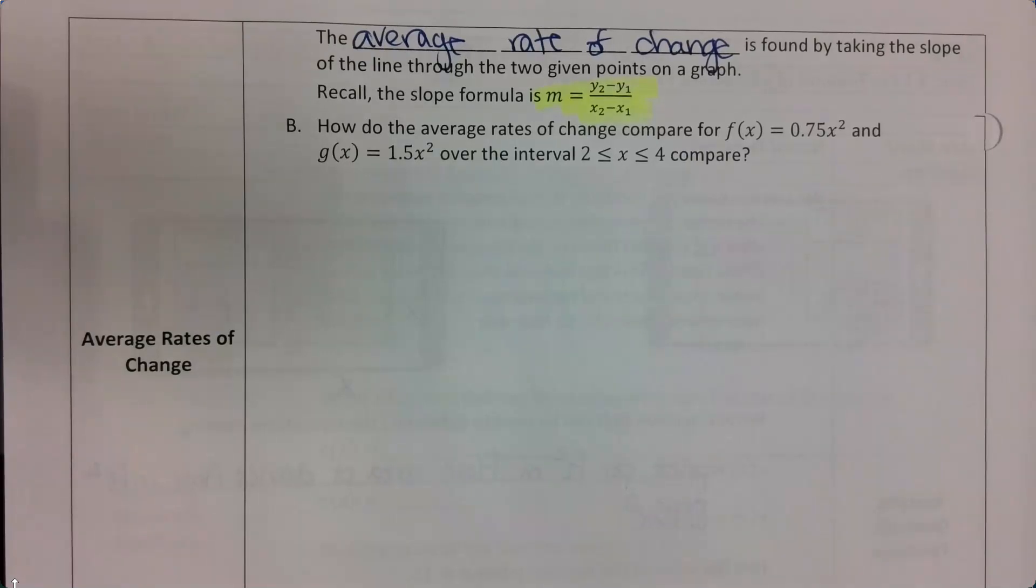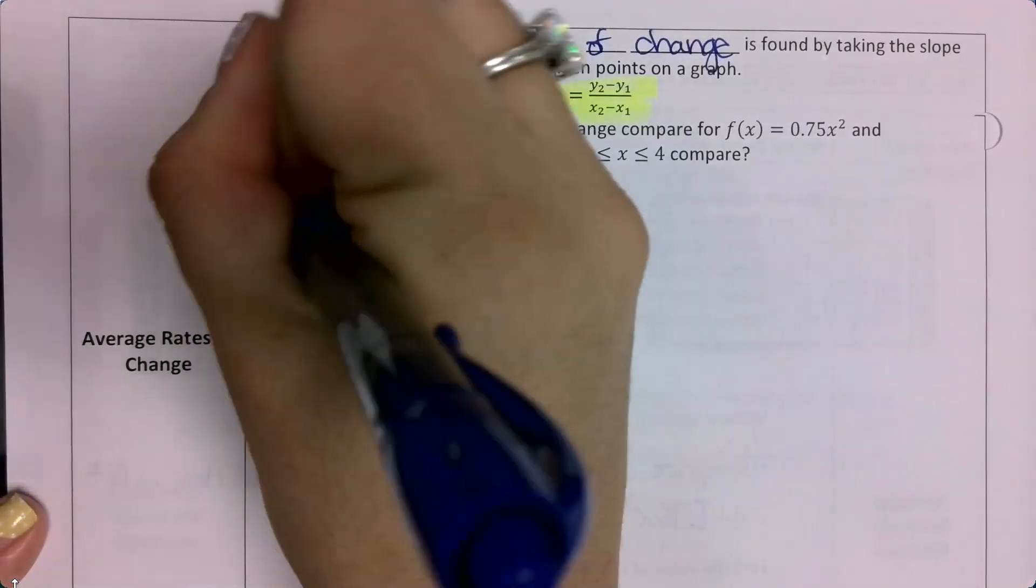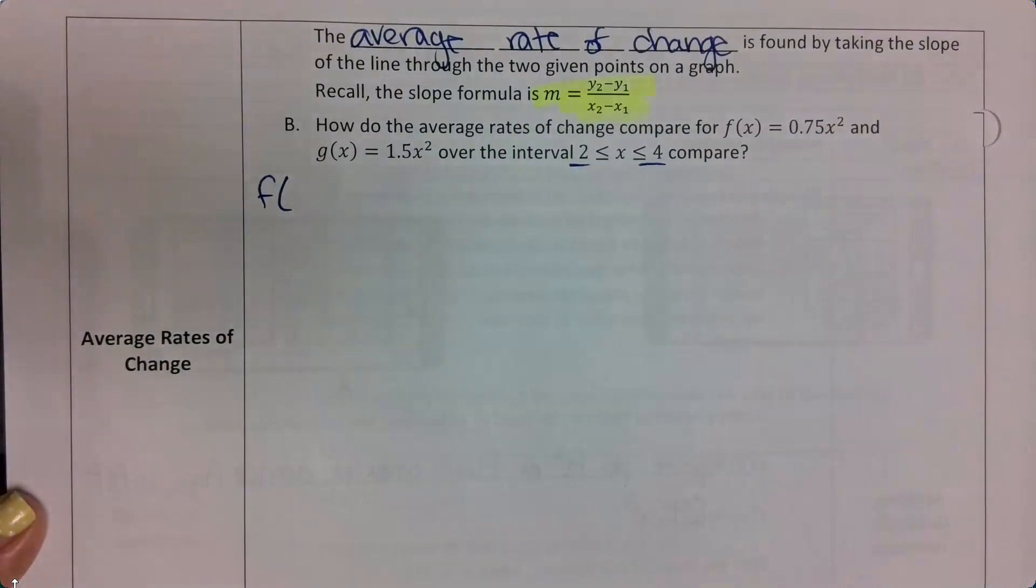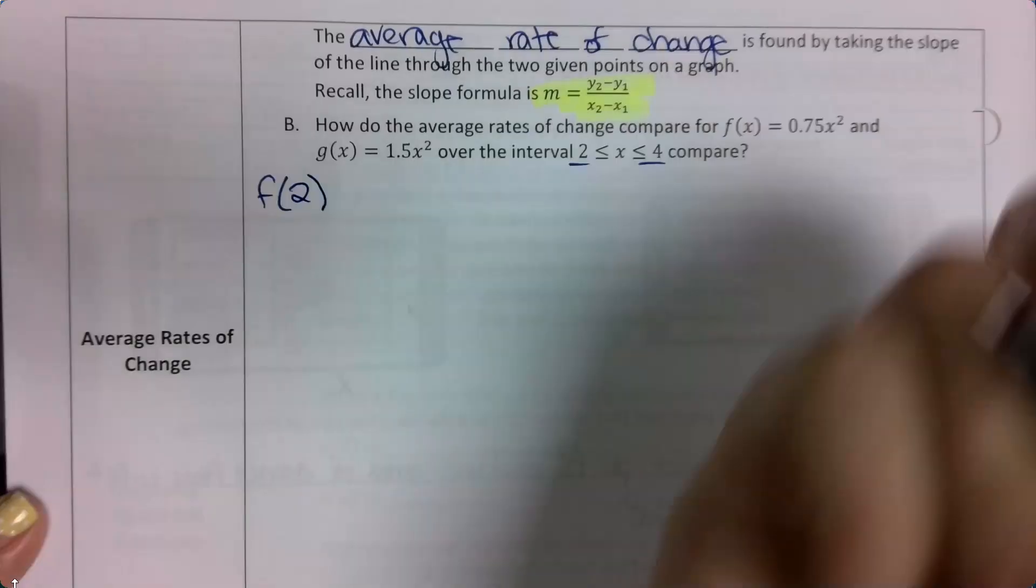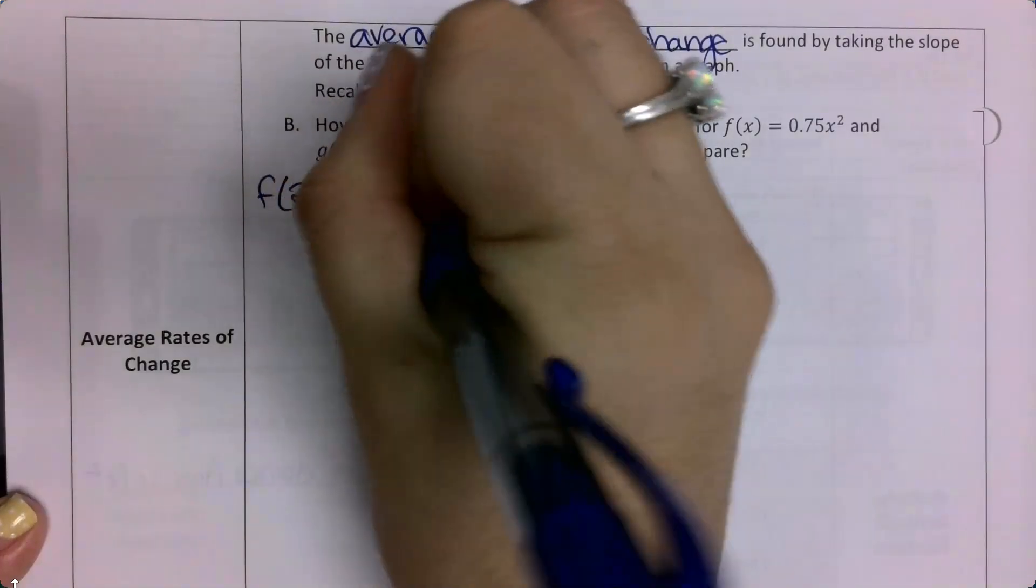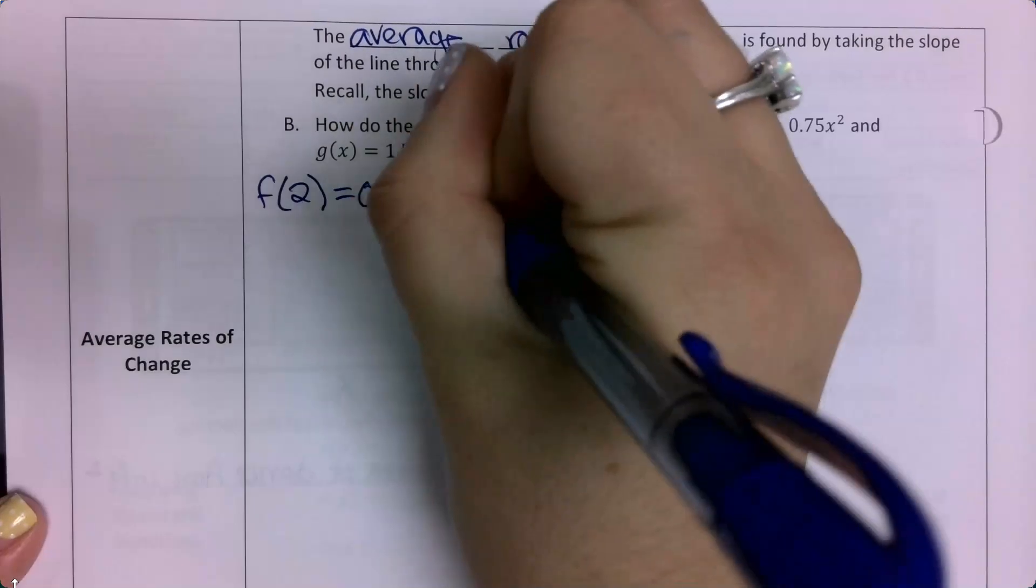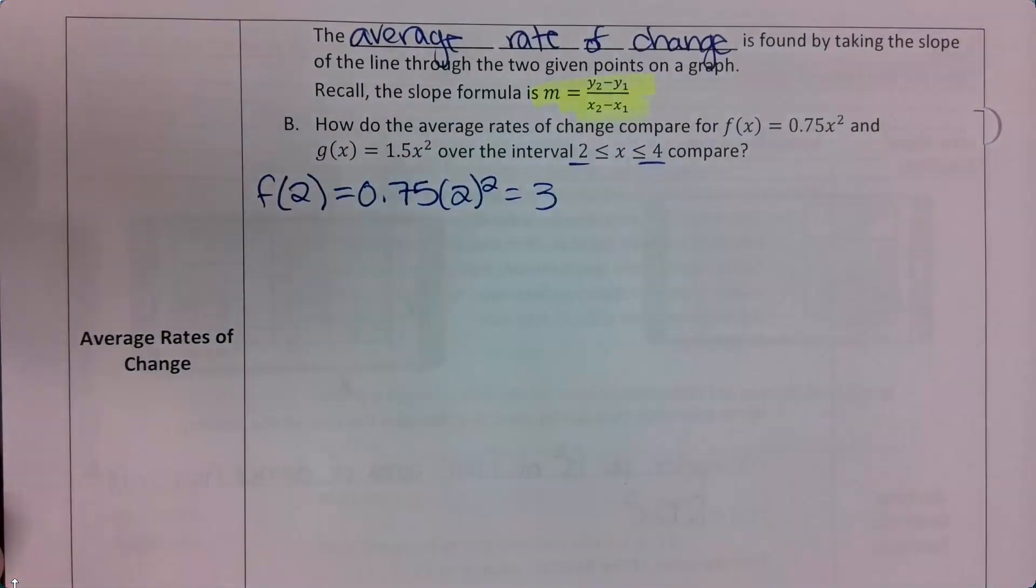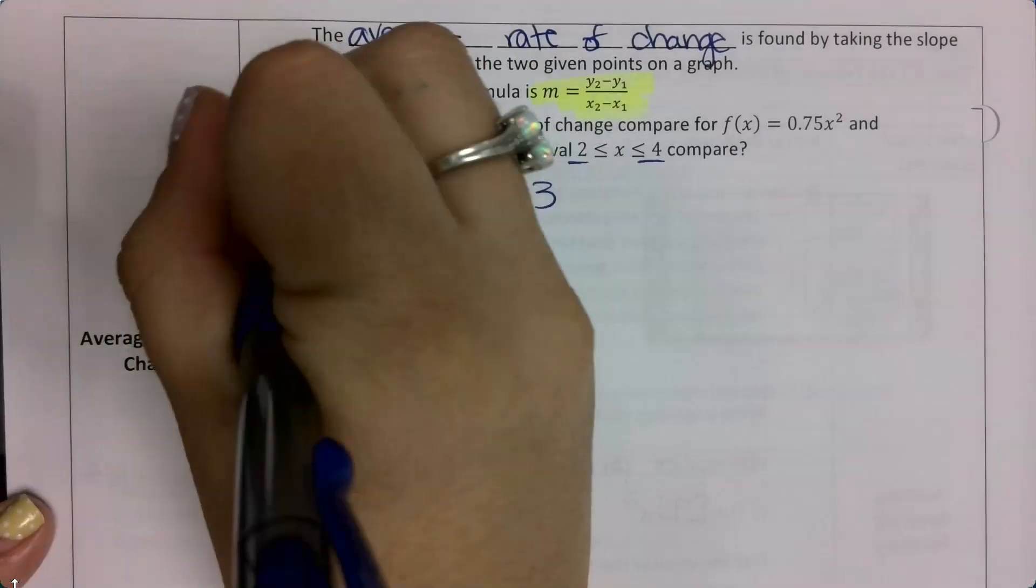So part b wants me to look at the average rates of change for f of x equals 0.75x squared and g of x equals 1.5x squared over the interval 2 to 4. So what I'm going to do is plug in 2 and 4 into both of my equations. So the first one I'm going to plug into is f. I'm going to plug in 2. So when I plug it in, I get out 3. And then I'm going to do the same thing for 4.